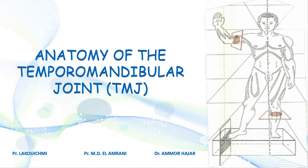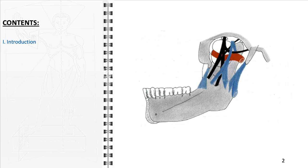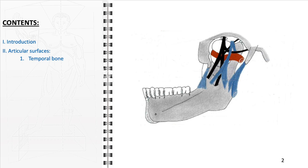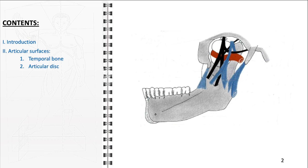In this video, we will explore the detailed anatomy of the temporomandibular joint, delving into its functional aspects, common disorders, and the significance of its role in dental and overall oral health. We will begin with an introduction to the temporomandibular joint, then delve into a detailed examination of the three distinct articular surfaces: the temporal bone, the articular disc, and the mandibular head, elucidating their unique structures and functions.